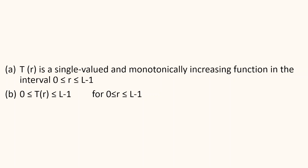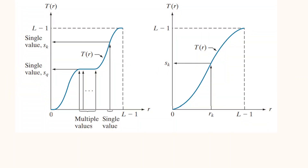The first condition says that T(R) is a single-valued and monotonically increasing function in the interval 0 to L-1. The second condition says that T(R) ranges from 0 to L-1 for all R varying from 0 to L-1. Now, in order to understand these two criteria, let us start with the first criteria which says that T(R) is a single-valued and monotonically increasing function.